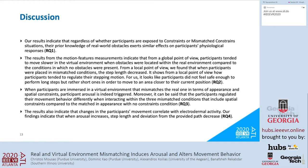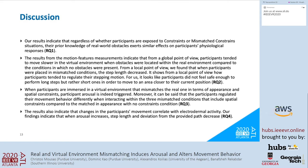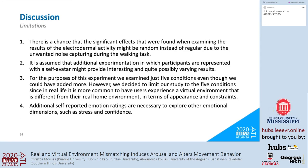From a global point of view, participants tended to move slower in the virtual environment when obstacles were located in the real environment. From a local point of view, when participants were placed in mismatched conditions, step length decreased — it looks like participants did not feel safe enough to perform long steps but rather short ones to move to an area close to their current position. Although only weak correlations were found, the results indicate that changes in participants' movement correlated with electrodermal activity. When arousal increases, step length and deviation from the provided path decrease.